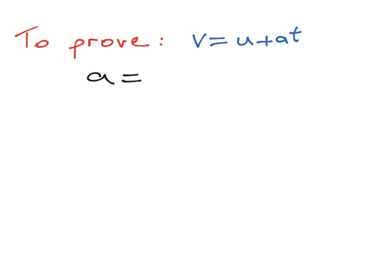We begin this proof by stating the definition of what acceleration is. It's the change in your speed, so that's going to be your final speed which is V minus U which is your starting speed, all divided by the time, because acceleration is the rate of change in velocity per unit of time which is seconds.